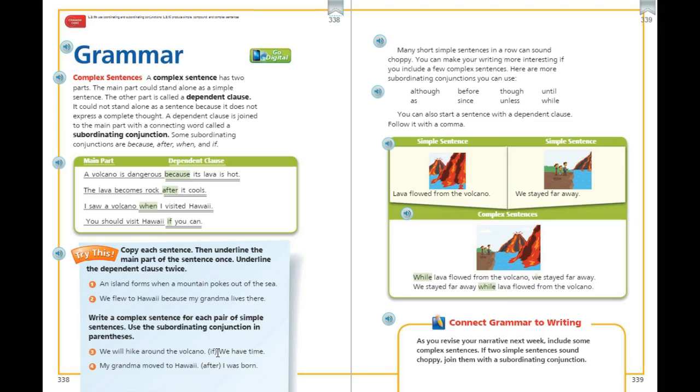Top of page 339. Many short simple sentences in a row can sound choppy. You can make your writing more interesting if you include a few complex sentences. Here are some more subordinating conjunctions that you can use: although, as, before, since, though, unless, until, and while.